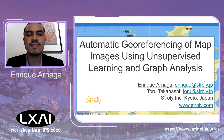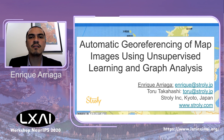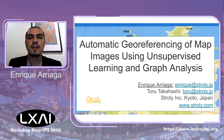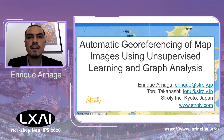Hello, my name is Enrique Arriaga. I'm the Machine Learning Leader at Strolli Inc. in Kyoto, Japan, and I will talk about the automatic geo-referencing of map images using unsupervised learning and graph analysis.